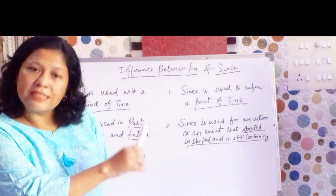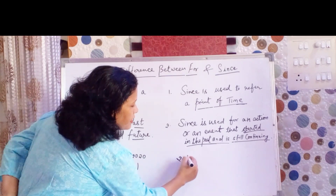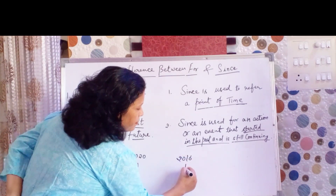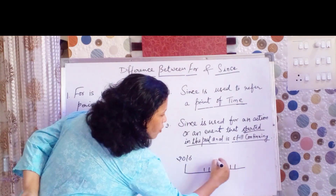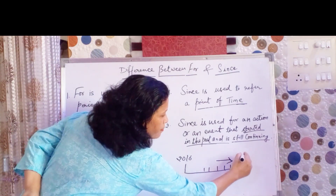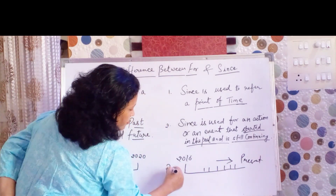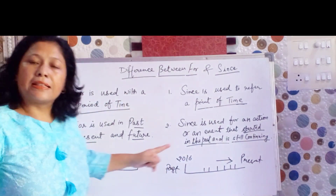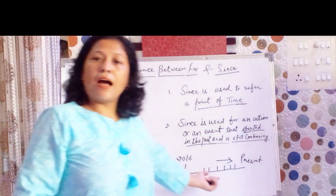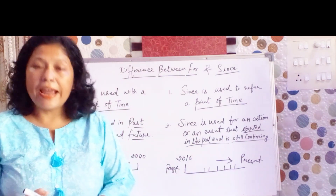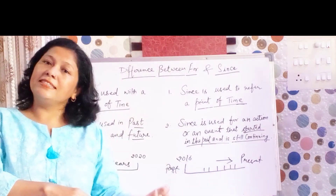'I live in London since 2016' — that process is still continuing in the present. The correct form would be: 'I have been living in London since 2016.'